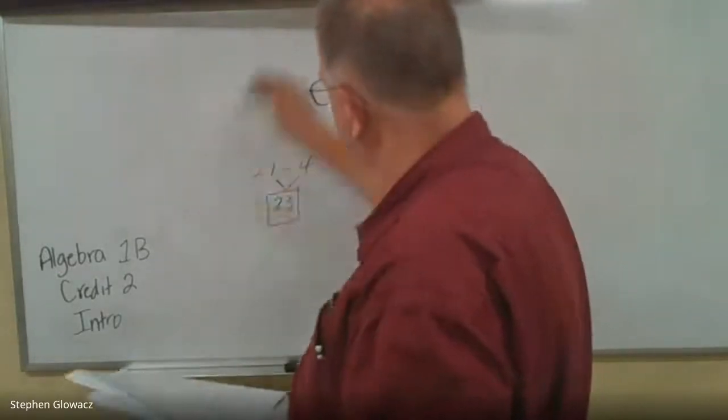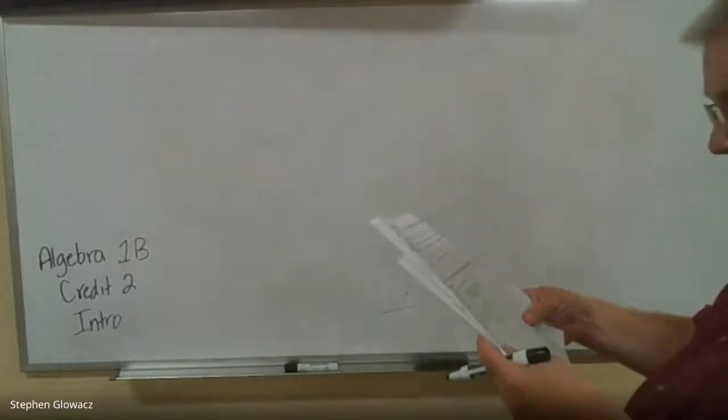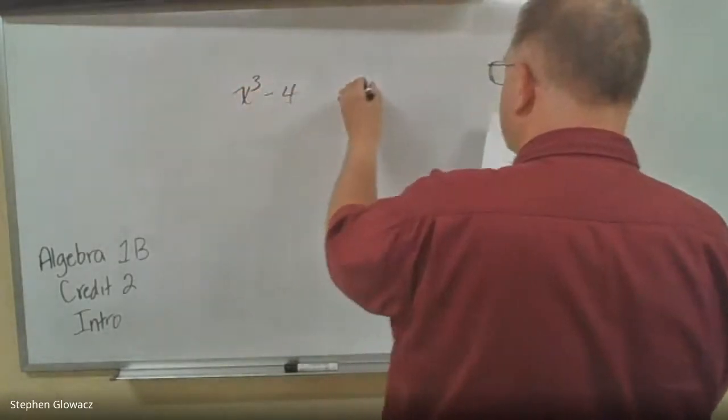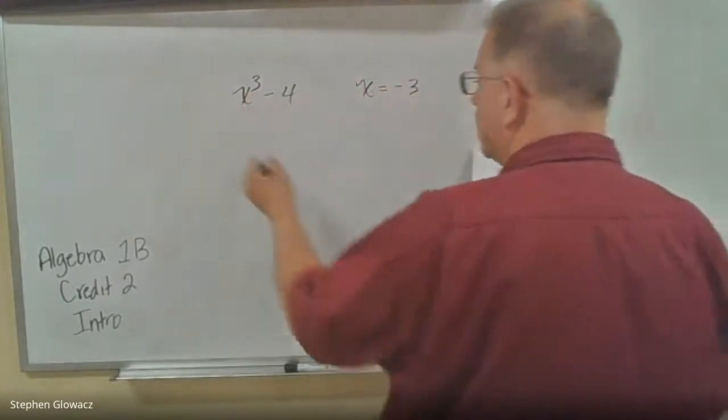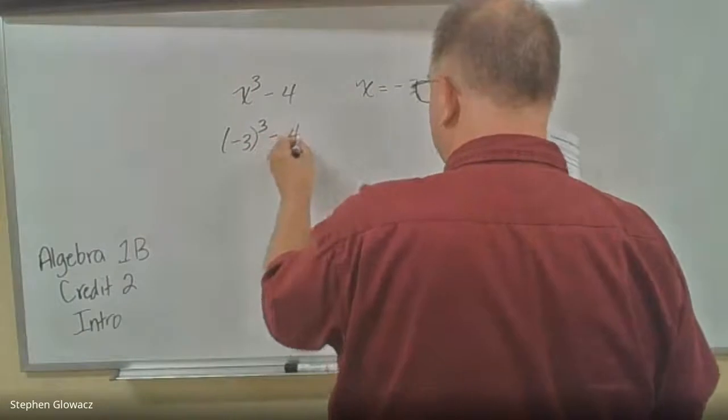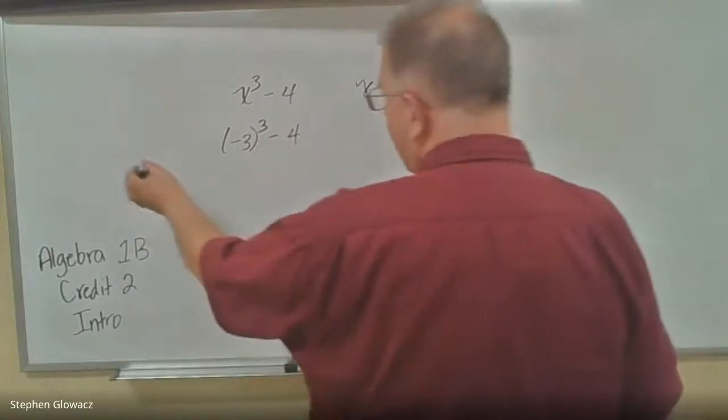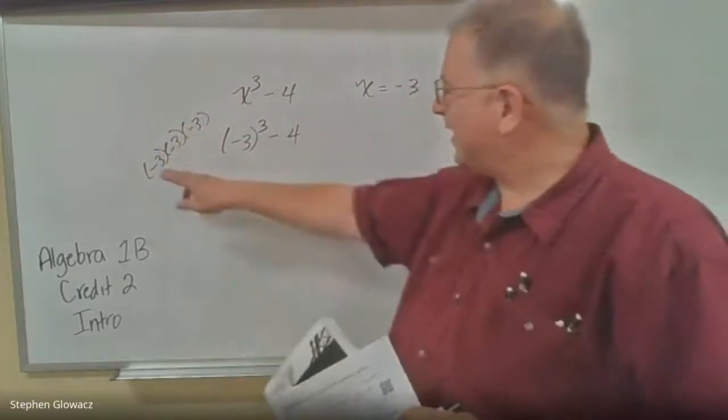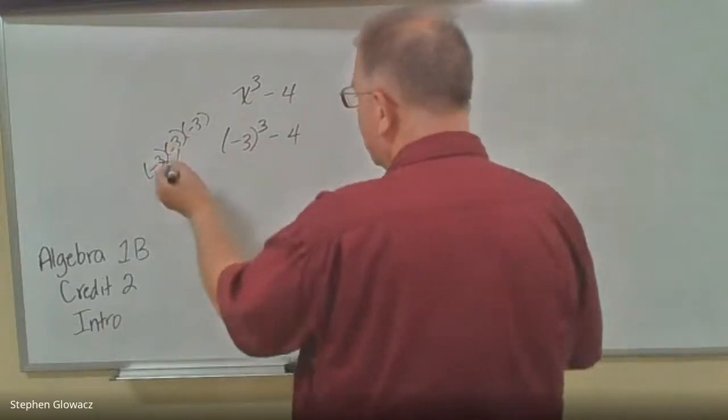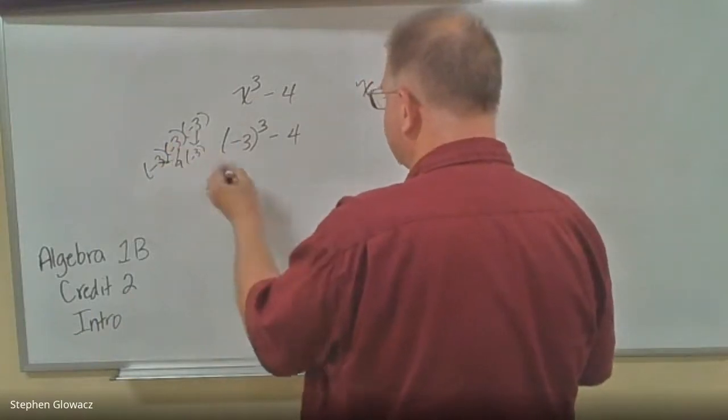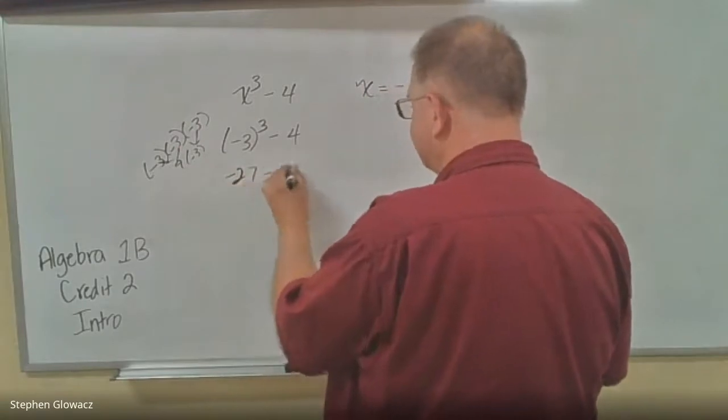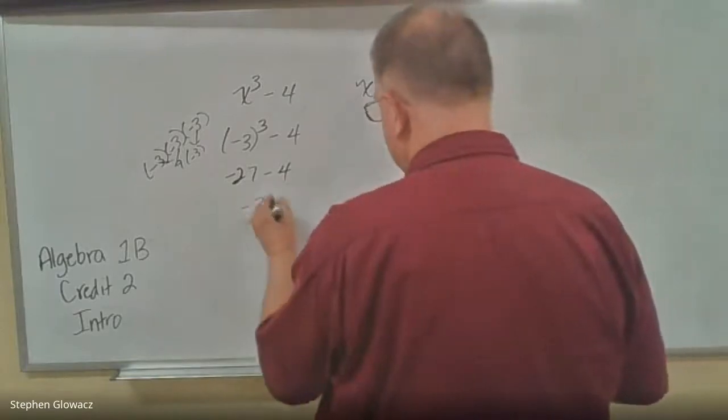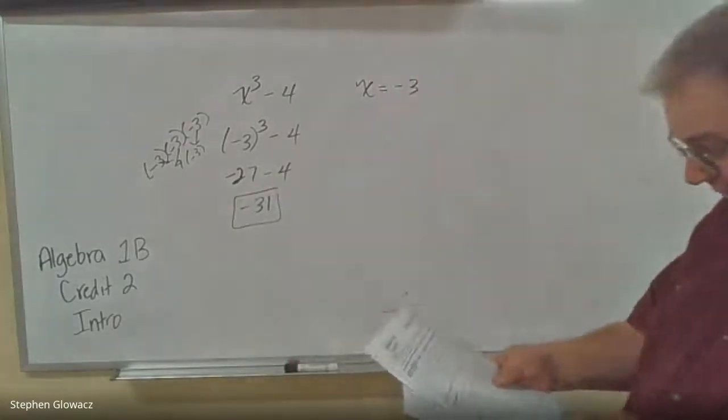Let's go to number 10. We have X to the third minus 4 again, and we're told that X is negative 3 this time. So we have negative 3 to the third power minus 4. Negative 3 to the third power is negative 3 times negative 3 times negative 3. Negative 3 times negative 3 is positive 9, and then positive 9 times negative 3 is negative 27. And then finally, negative 27 minus 4 would be negative 31. And that is it for page 6.